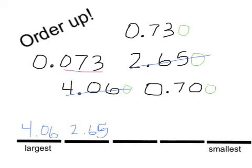So we know that zero and seventy-three hundredths is bigger than zero and seventy-hundredths, and they're both bigger than zero and seventy-three thousandths. If it helps you to think of money, think about this. This is four dollars and six cents, two dollars and sixty-five cents, seventy-three cents, seventy cents, and this is seven pennies and three extra bits.